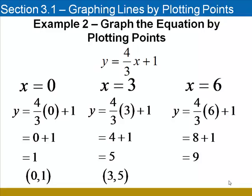Or, you can divide the common factor of 3 out of 3 and 6, which leaves you with 2 times 4, also 8. When I add 1 to this result, I get 9, so my third ordered pair is 6, 9.